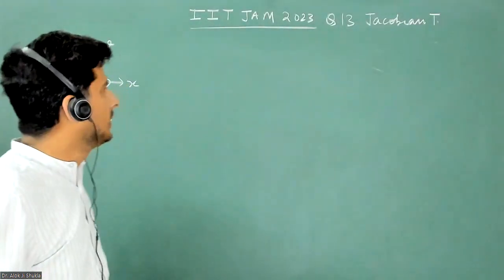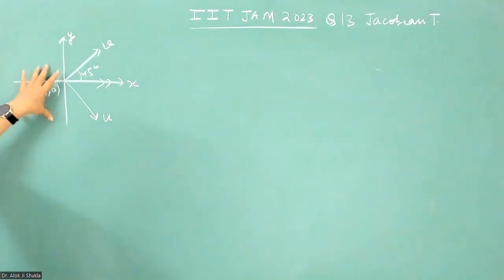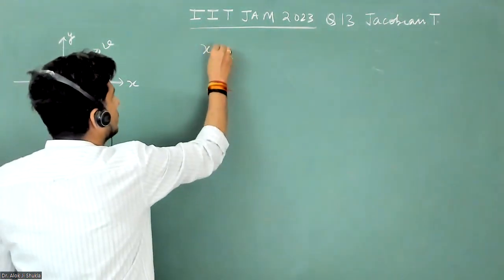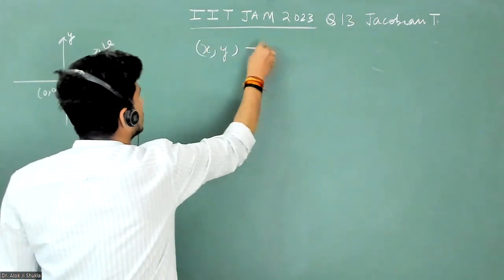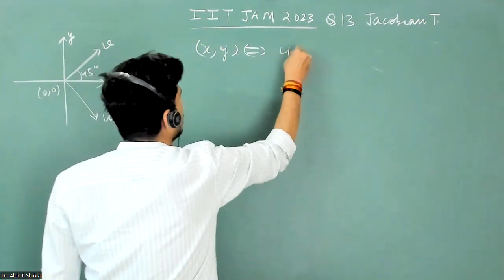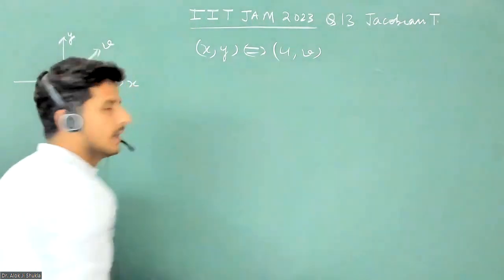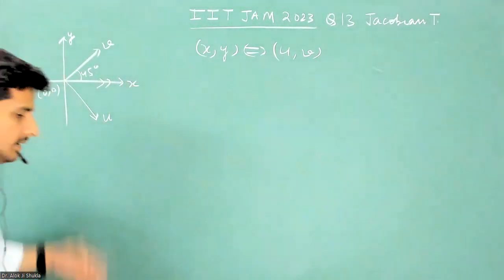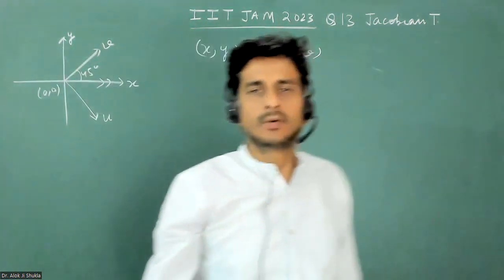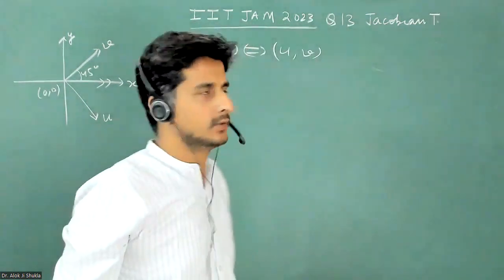This question is based on Jacobian matrix, in which there is a transformation given from X comma Y to some coordinate U comma V. According to the rule given in the figure, you have to calculate that transformation matrix.